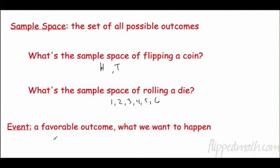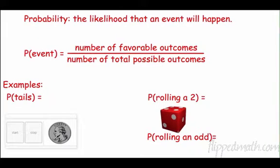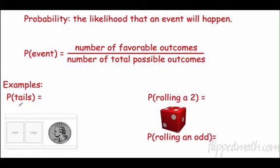An event is a favorable outcome — it's what we want to actually happen. Maybe I want to roll a two; the event I want is rolling a two. That takes us to probability: the likelihood that an event will happen, which is the number of favorable outcomes over the total number of possible outcomes.